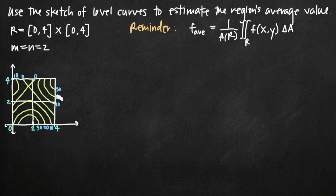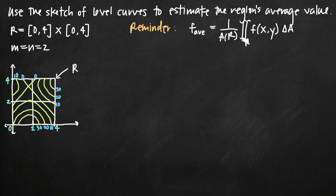We've also been given a sketch of level curves over this region. We're going to need the formula for average value of the function. This square region we'll call region R, defined as 4 by 4. A(R) means the area of that region, and the R underneath the double integral sign tells us we're finding the integral over this region.